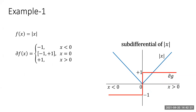Here is an example of a sub-differential. Take f(x) to be the absolute value of x. When x is positive, f(x) equals x; when x is negative, f(x) equals negative x. When x is strictly negative, the slope is negative 1, so the sub-gradient equals the gradient, which is negative 1 — it's unique. Likewise, when x is strictly positive, f(x) is x and the slope is plus 1 everywhere, so the sub-gradient is plus 1.